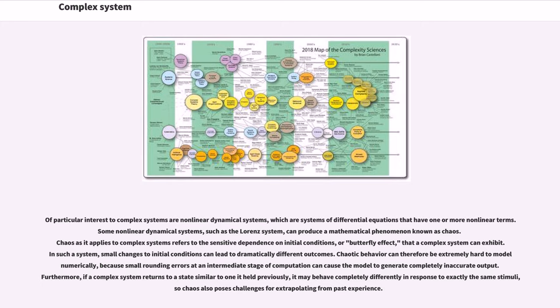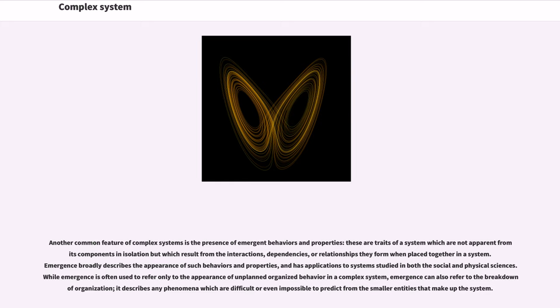In such a system, small changes to initial conditions can lead to dramatically different outcomes. Chaotic behavior can therefore be extremely hard to model numerically, because small rounding errors at an intermediate stage of computation can cause the model to generate completely inaccurate output. Furthermore, if a complex system returns to a state similar to one it held previously, it may behave completely differently in response to exactly the same stimuli, so chaos also poses challenges for extrapolating from past experience.